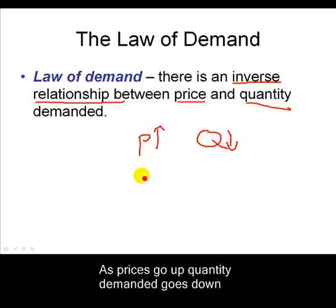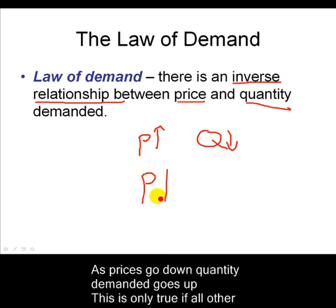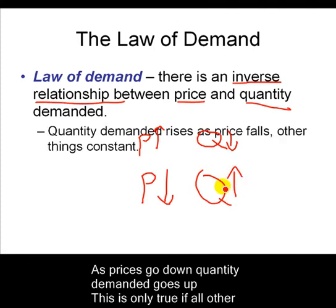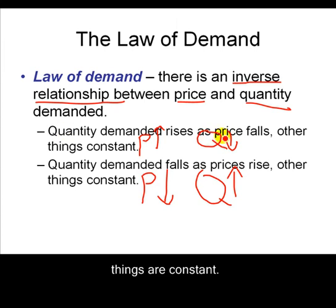As prices go down, quantity demanded goes up. Quantity demanded goes up as prices fall — other things constant. Quantity demanded falls as prices rise — other things constant.